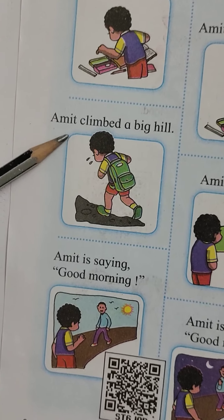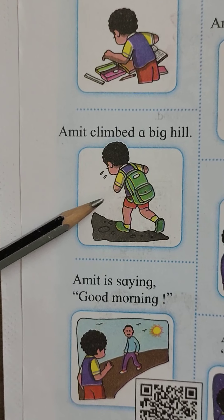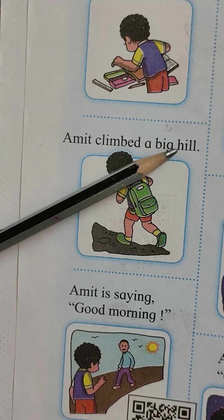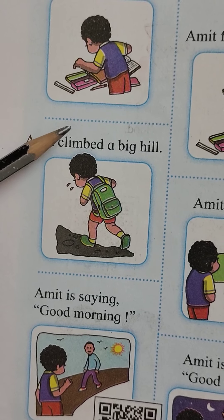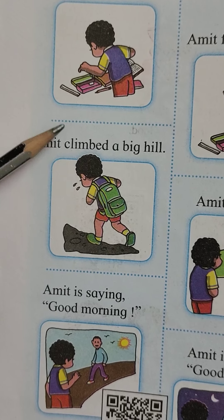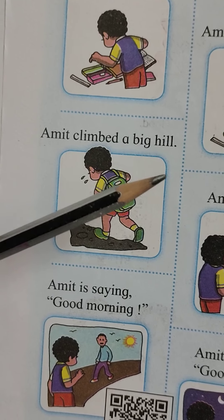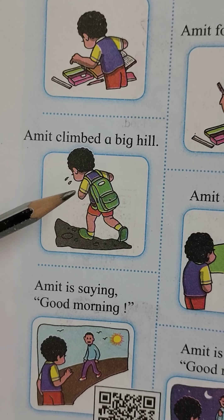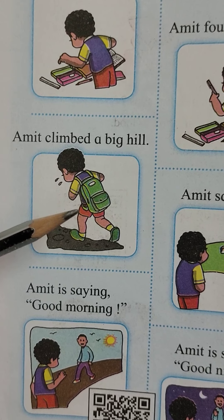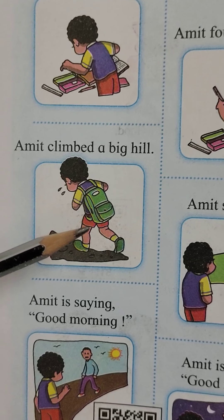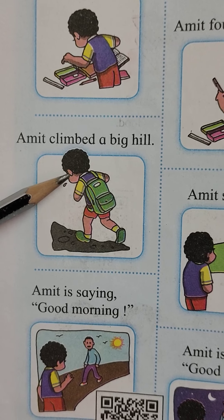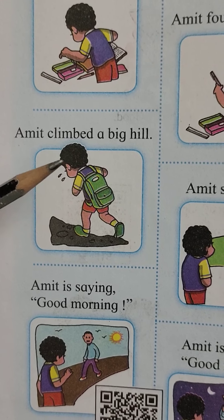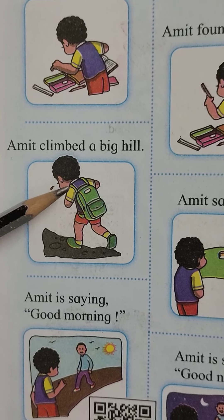See here. Amit climbed a big hill. Amit ek dhongar — eka da dhongar — chadat ahi. 'Climbed' means 'chadne.' Amit climbed a big hill, so Amit is climbing a hill. Malasanga dhongar chadata na, you feel tired, tumhi thakun zata. In the same way Amit is getting tired here. So imagine yourself as Amit and make a tired face.